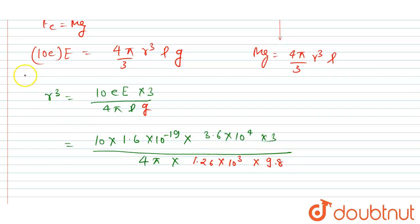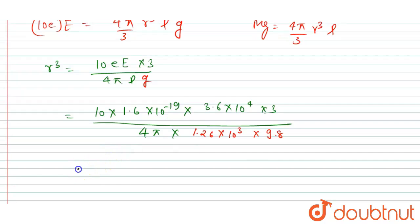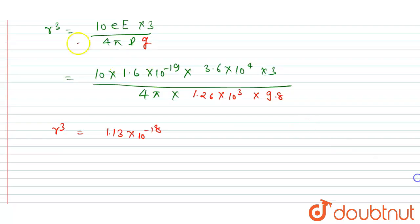So now you can calculate this, right? So I will write this equals, so if you solve this you will get the value of r³ as 1.13 × 10⁻¹⁸. This will be the r³.